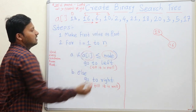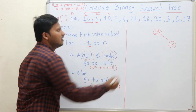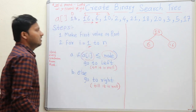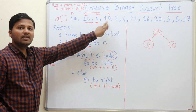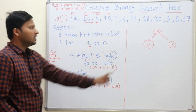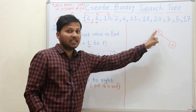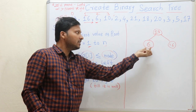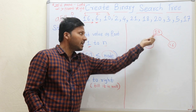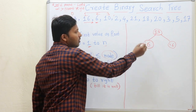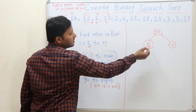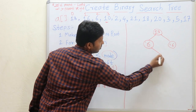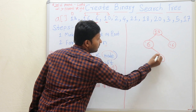16 goes to the right because it is greater than 13. Now for 6: 6 is less than 13, so 6 goes to the left of 13. Next element is 10. Check whether 10 is less than 13 — yes it is — so come to the left child of 13. But there is already an element there, so compare 10 with 6. 10 is greater than 6, so it becomes the right child of 6.